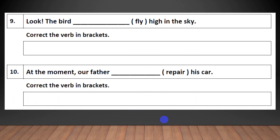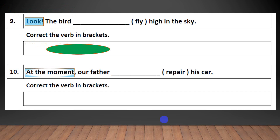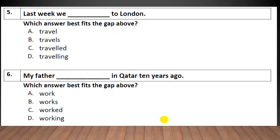Have a look at this one. The key word 'look' indicates present continuous. So: The birds are flying in the sky at the moment. Our father is repairing his car at the moment — that means I use the present progressive. Last week, we traveled to London — I have the key word 'last week', which indicates past simple.